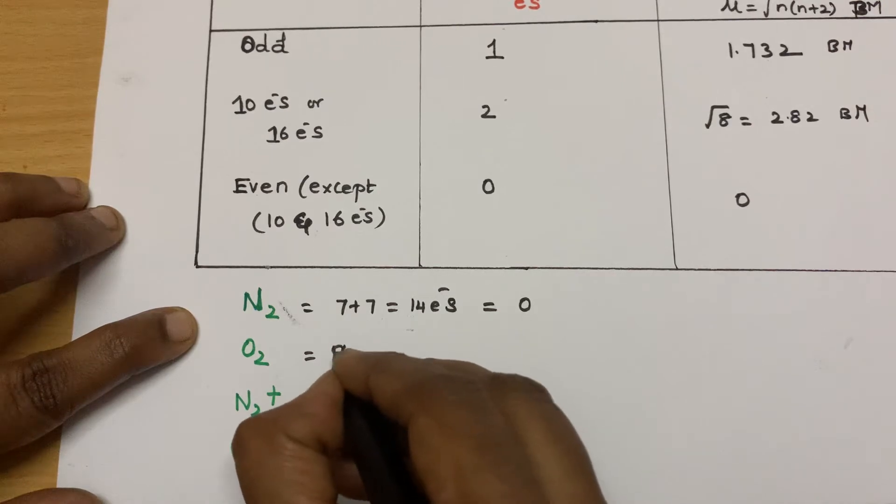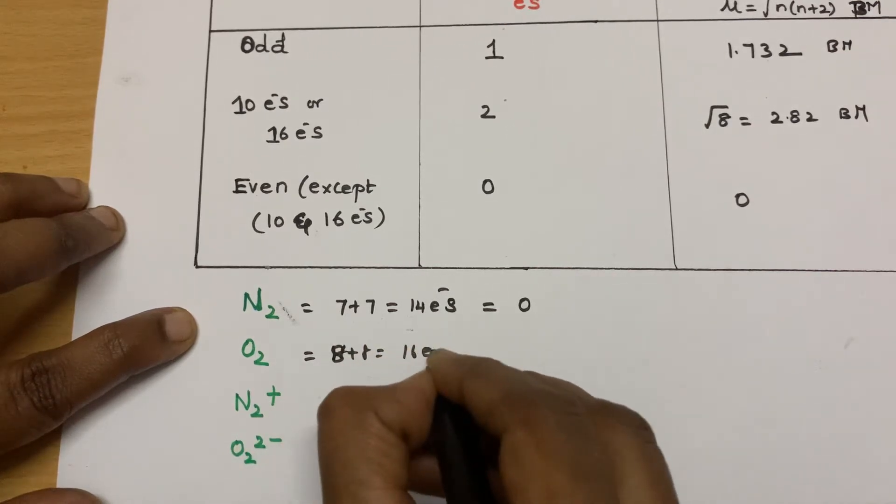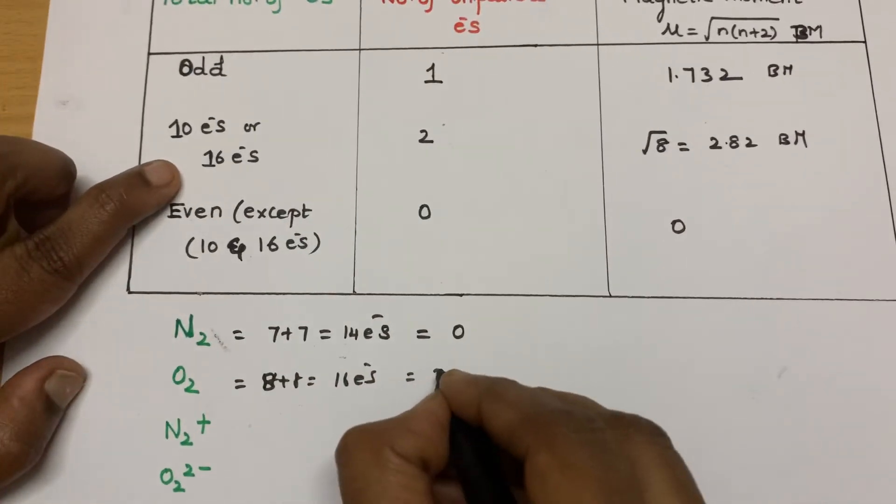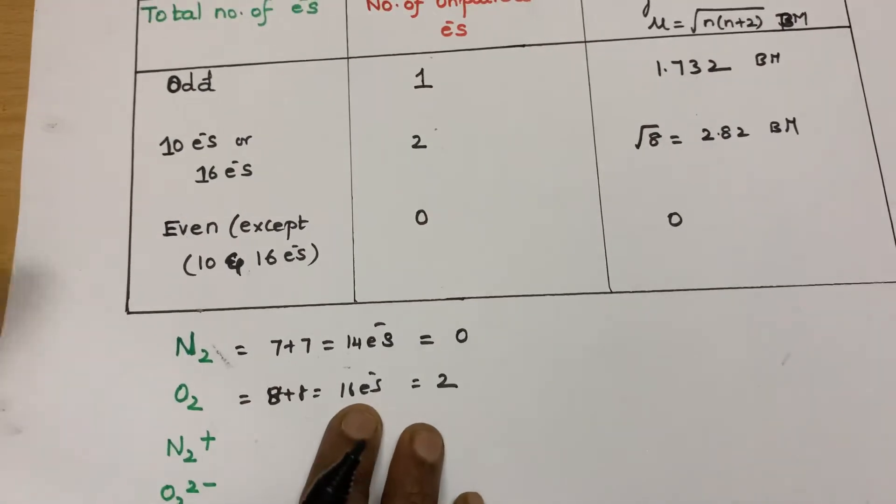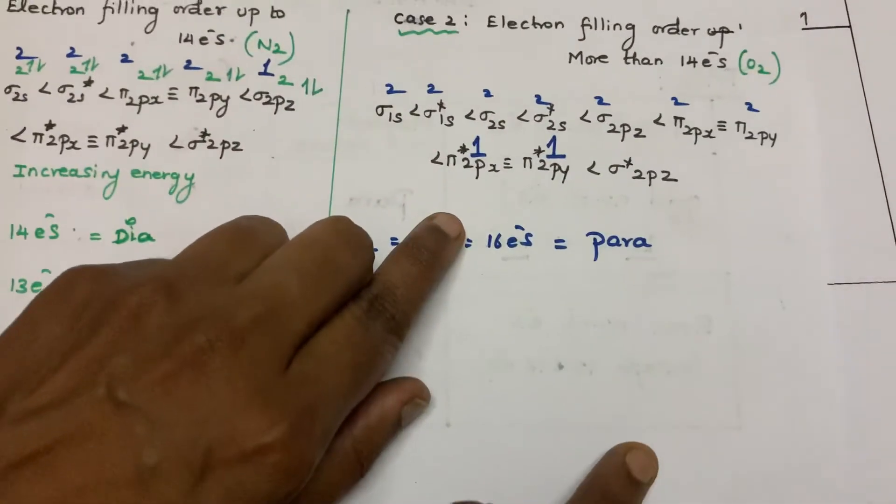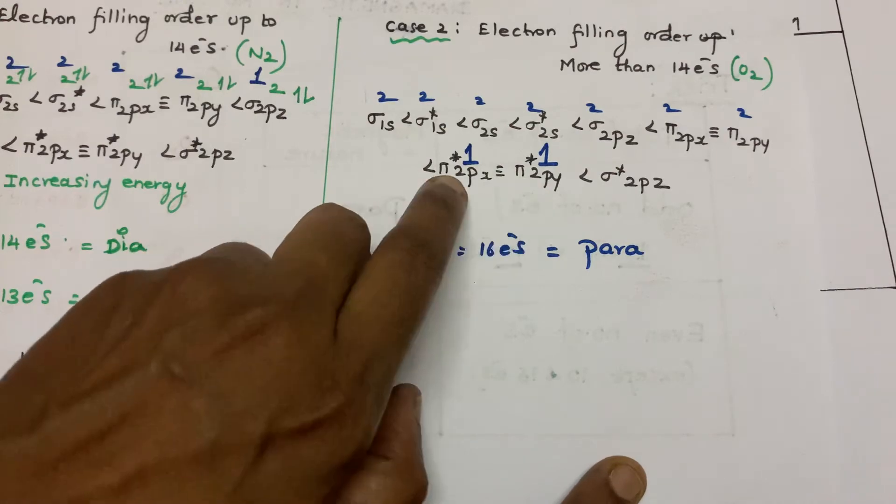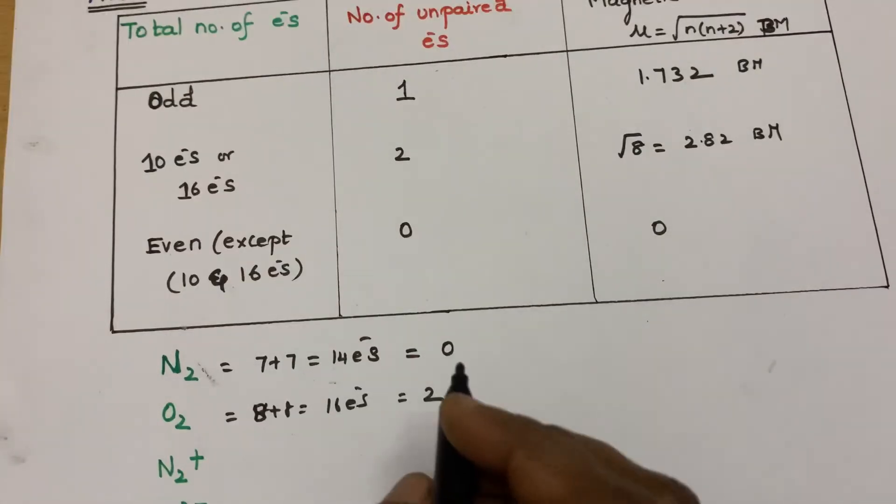So this is what, 8 plus 8 is equal to 16. For 16, there will be 2 unpaired electrons. You can easily check here. For oxygen, we had 2 unpaired electrons.